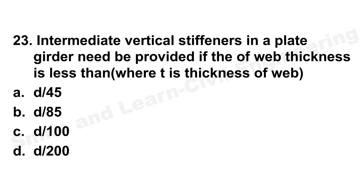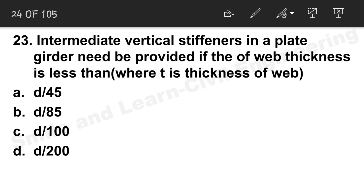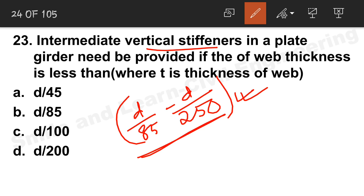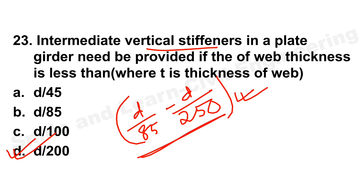Question 23: Intermediate vertical stiffeners are provided in a plate girder if the web plate thickness is less than what? We know the range d/85 to d/200 is required for intermediate stiffeners. If the web thickness is less than d/85, we provide intermediate vertical stiffeners. Option D is the correct answer.